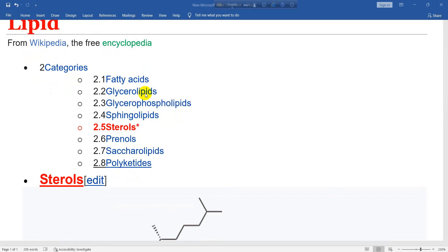1. Fatty acids. 2. Glycerolipids. 3. Glycerophospholipids. 4. Sphingolipids. 5. Sterols. 6. Prenols. 7. Saccharolipids. 8. Polyketides.